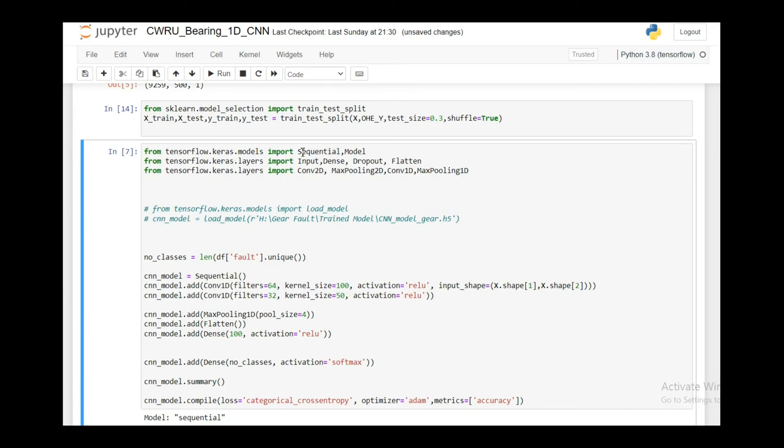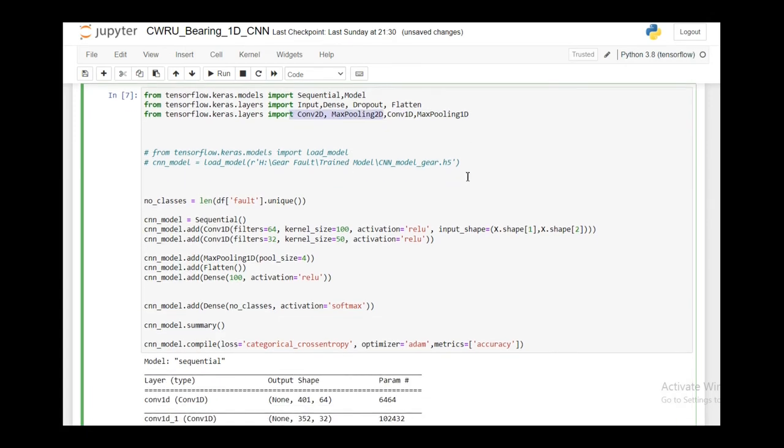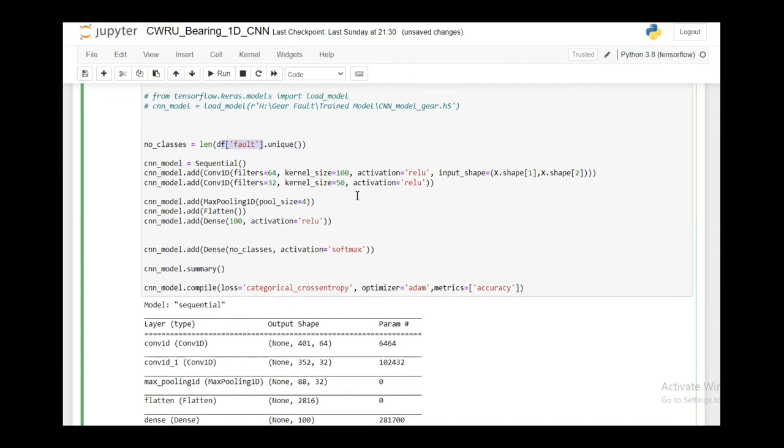For the convolutional model I'll import the sequential and model function, the layer input layer, dense layer, dropout, flatten, and for the convolutional layers I'll import convolutional 1D and max pooling 1D. This code is written just to save and load the model. First I'll save the number of classes. Number of classes in this case I have equal to 14, that is the unique number of classes present in my dataframe. First I have initialized the sequential class.